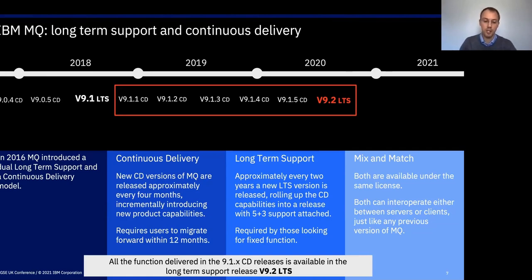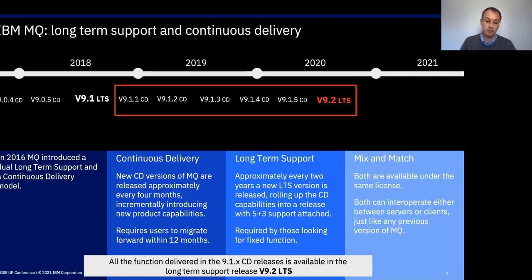We also have something called a continuous delivery release, whereby we make available functional enhancements every three to four months. This allows you to take advantage of new features in either specific environments, or you can choose to use the continuous delivery release across your entire estate. The continuous delivery releases are supported for 12 months, because the intent is that you will continue to keep taking those updates as we release them over time.